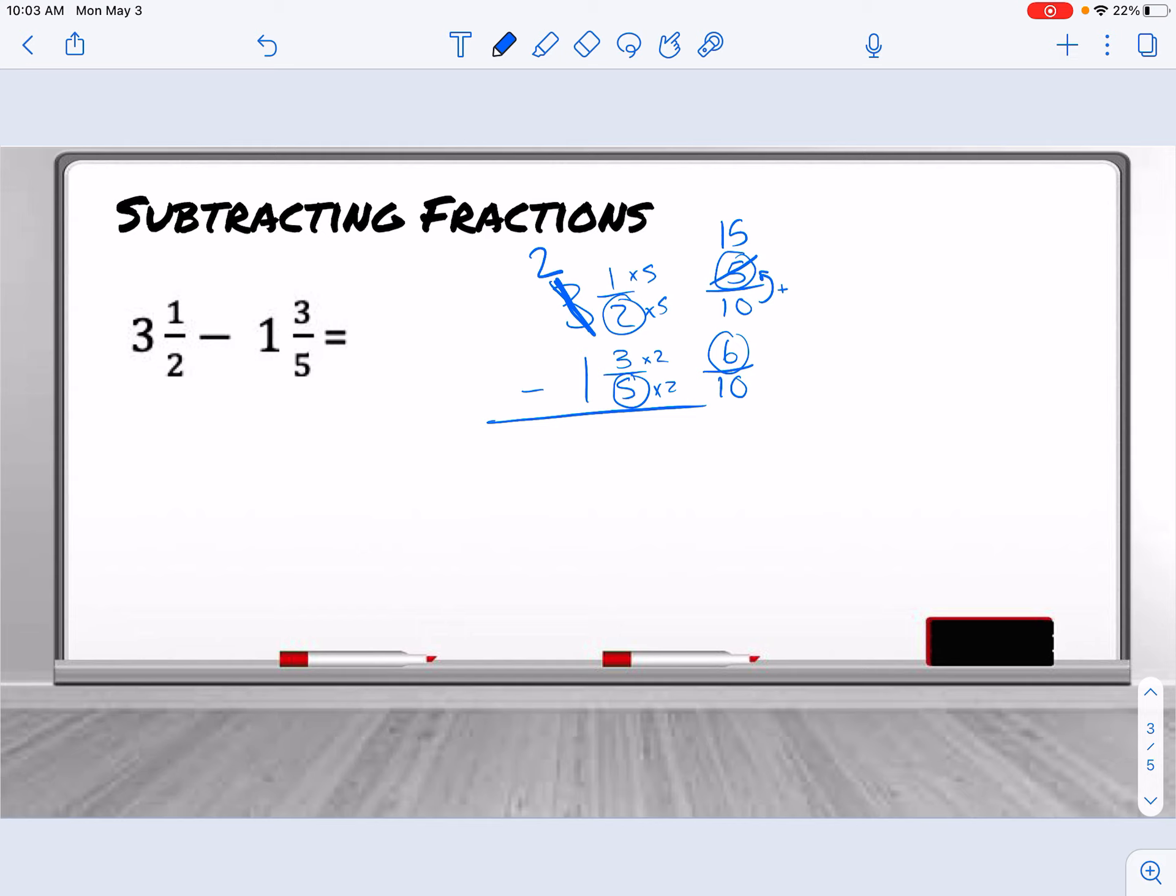Now I can subtract. 15 minus 6 is 9. So 9 out of 10. And then my whole number is 2 minus 1 is 1. So we get 1 and nine-tenths. And that's how you will borrow when you subtract.